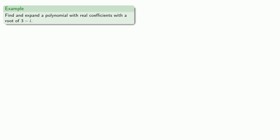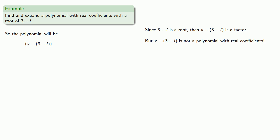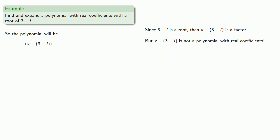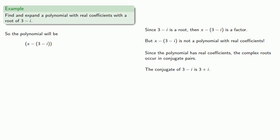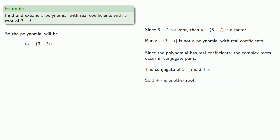So let's say we want to find and expand a polynomial with real coefficients with a root of 3 minus i. Since 3 minus i is a root, then x minus (3 minus i) is a factor. But this polynomial doesn't have real coefficients. Now since the polynomial must have real coefficients, the complex roots have to occur in conjugate pairs. The conjugate of 3 minus i is 3 plus i, so 3 plus i is another root.